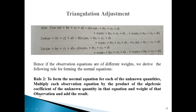The multiplication of the algebraic coefficient of the unknown quantity and the weight of the equation together determine the importance and weightage of each equation in forming the normal equation. These are the two rules to form the normal equation: Rule 1 applies when all weights are the same, and Rule 2 applies when weights are different.